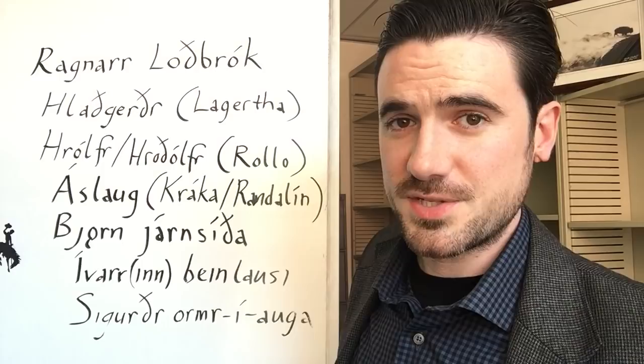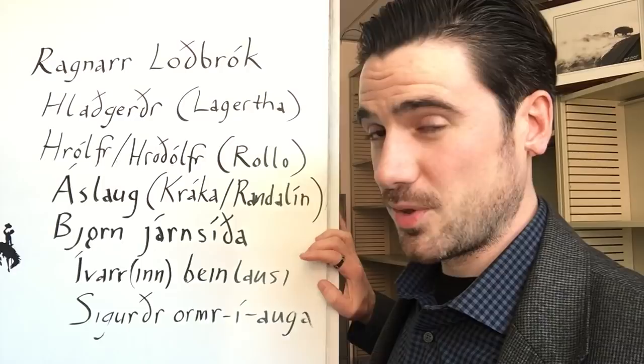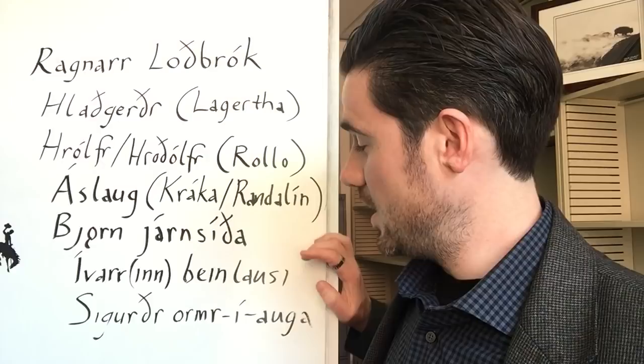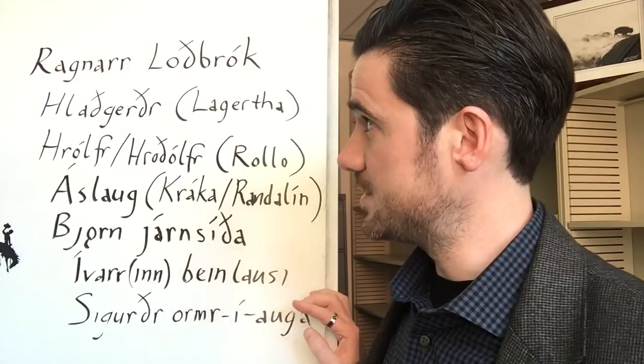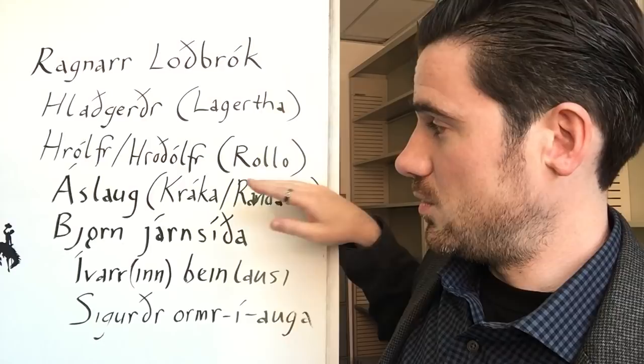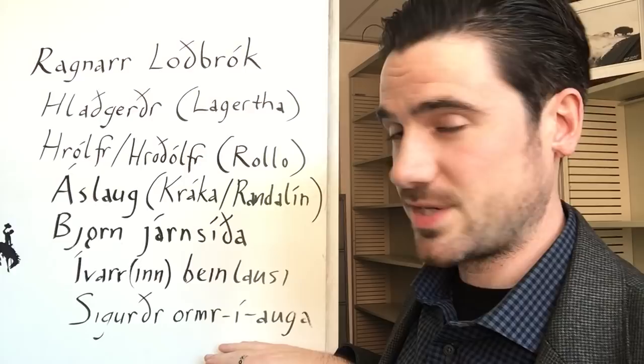According to the Norse saga, Ivar the Boneless is called so, because he literally doesn't have bones. He has only cartilage where his bone should be. And Sigurðr's snake eye, according to the Norse saga, he has the snake in his eye, because his father Ragnar is a dragonslayer, and his maternal grandfather Sigurðr was also a dragonslayer, and he's the first child born after Ragnar knows Oslaug's true parentage.